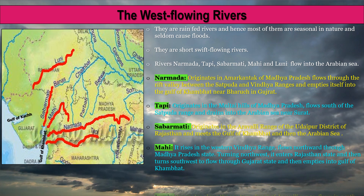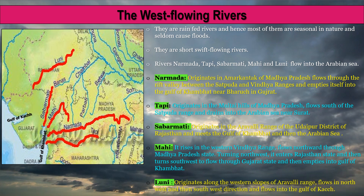The River Luni originates from the western slopes of the Aravali range and flows in the northwest and then southwest direction into the Rann of Kutch and then into the Gulf of Kutch.